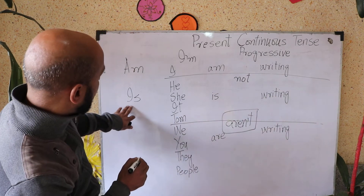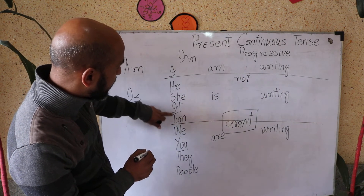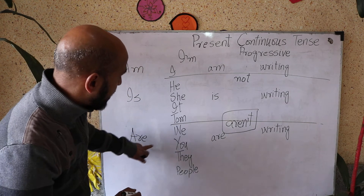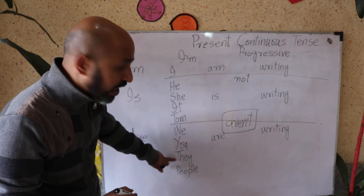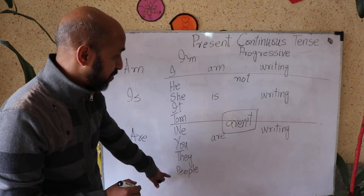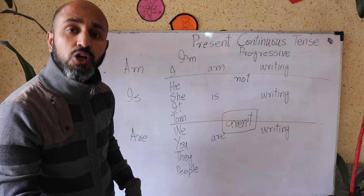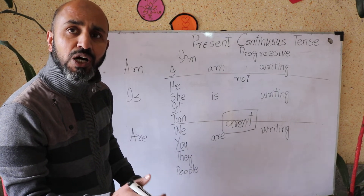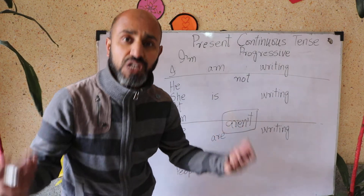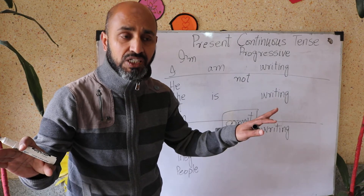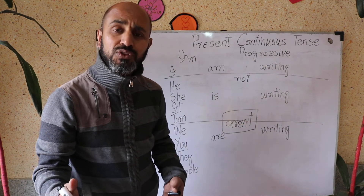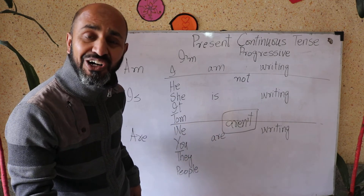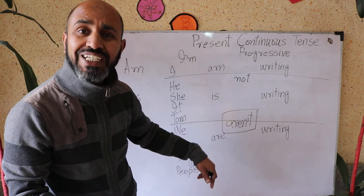Just as we use 'is' at the beginning of interrogatives with 'he', 'she', 'it', and singular nouns, we use 'are' at the beginning of interrogatives with 'we', 'you', 'they', and plural nouns like 'people'. For example: Are we writing? No, we aren't, or yes, we are. Are you writing? No, I'm not, or yes, I am. Are they writing? No, they aren't, or yes, they are. Are people writing? Yes, they are, or no, they aren't.